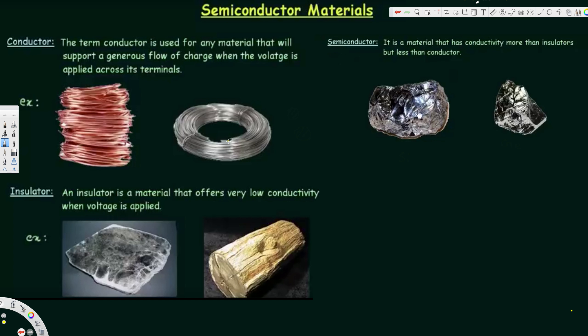The first topic is conductor. A conductor is any material that will support a generous flow of charge when voltage is applied across the terminals. We already know that the flow of charge through a cross-sectional area in a given time is called current. Depending upon this current, we categorize materials into three categories: conductor, insulator, and semiconductor.